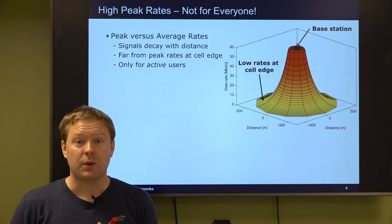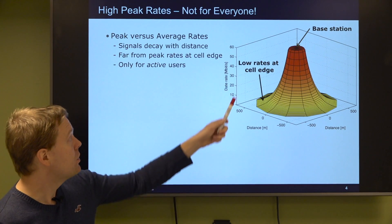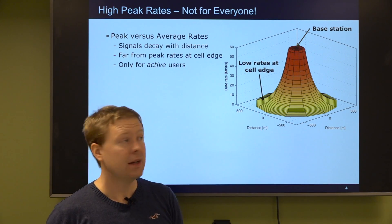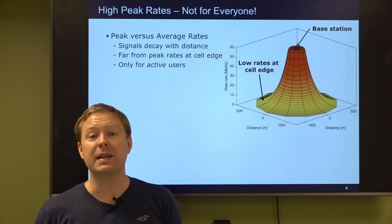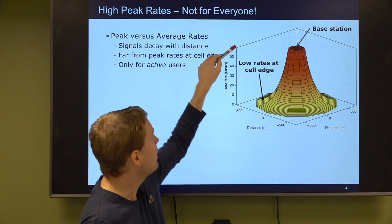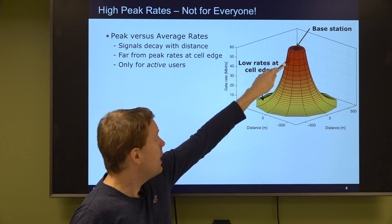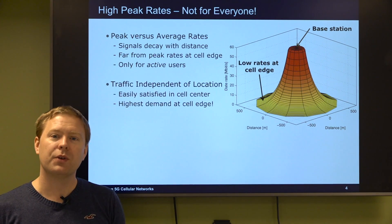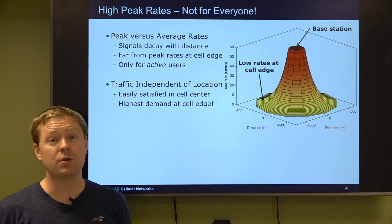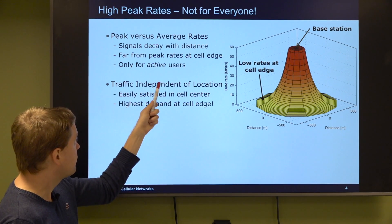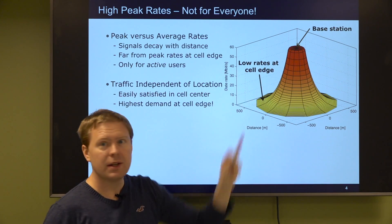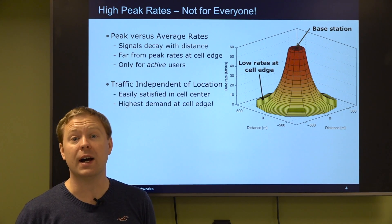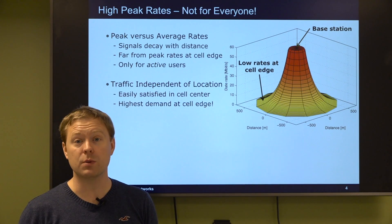However high peak data rates are not for everyone. If we put out the base station at one location we are showing what data rates users are getting at other locations. If we are very close to the base station we will get a peak value around 50-60 megabits per second. But then it goes down very quickly and we will have low rates at the cell edge. The traffic demands that the users are having is independent of where they are.